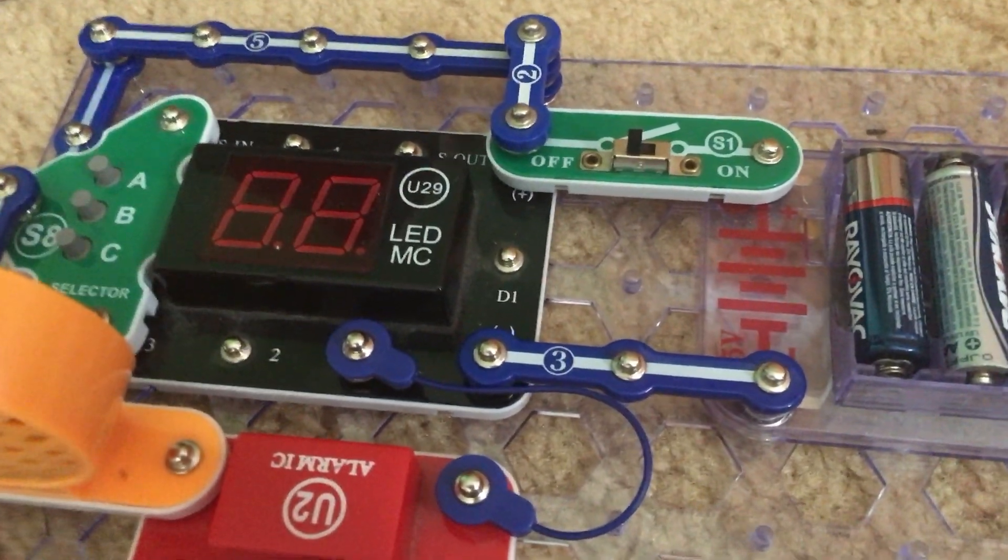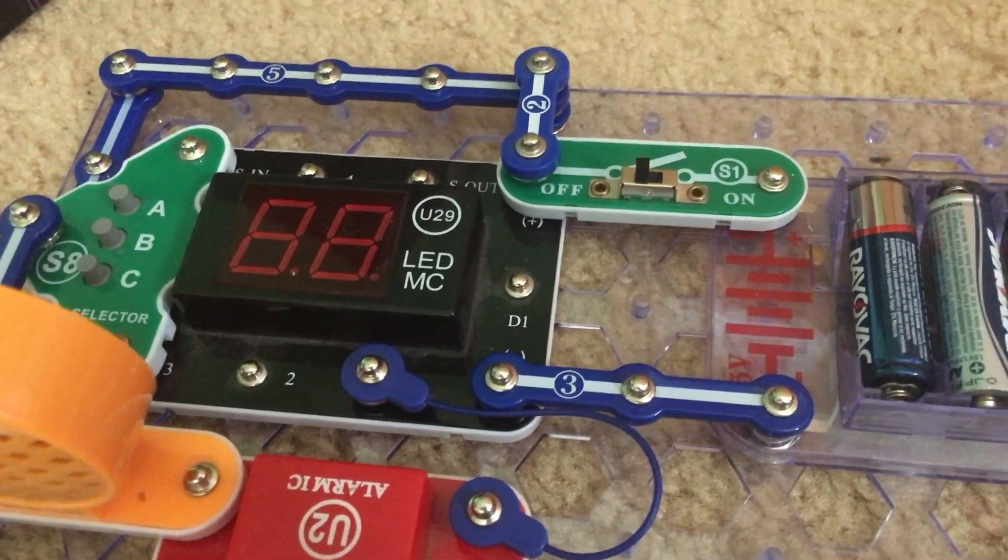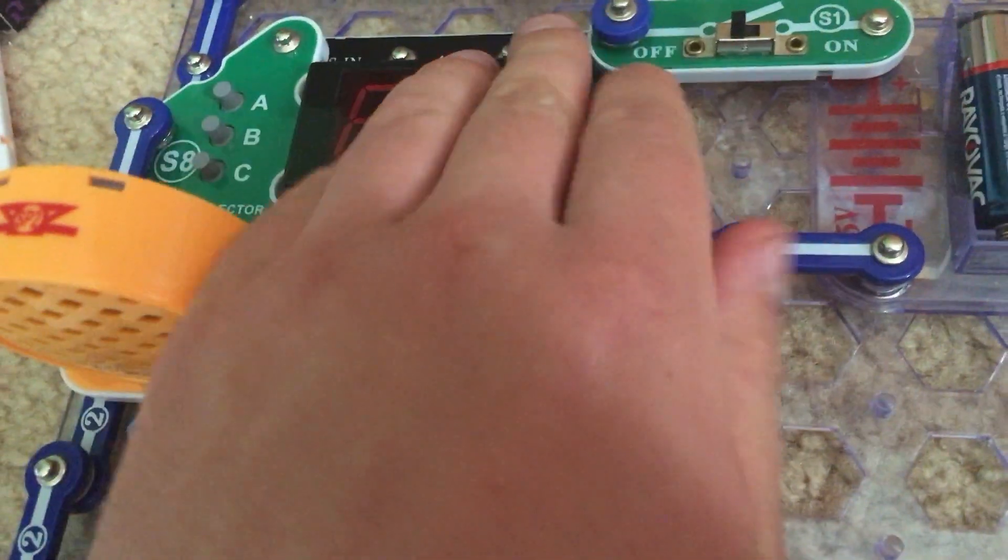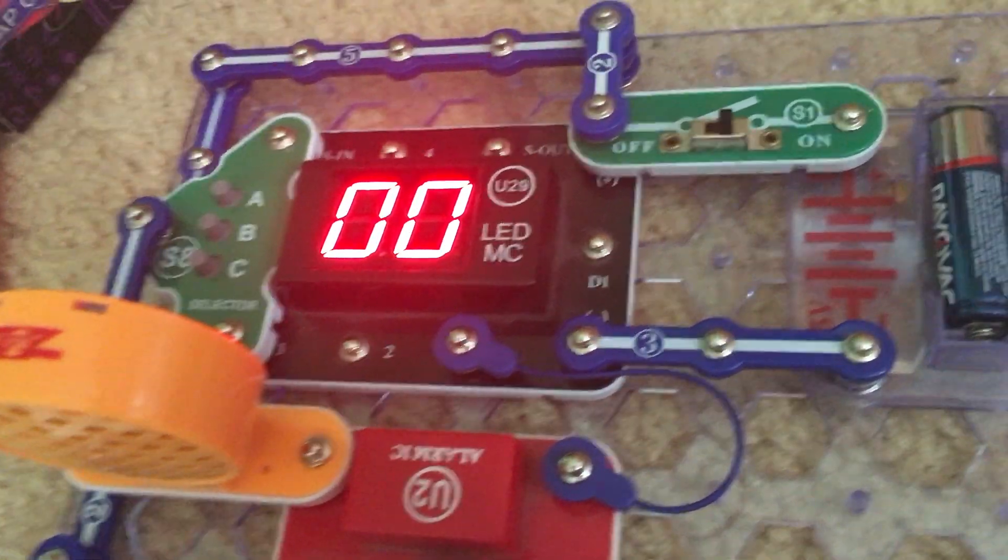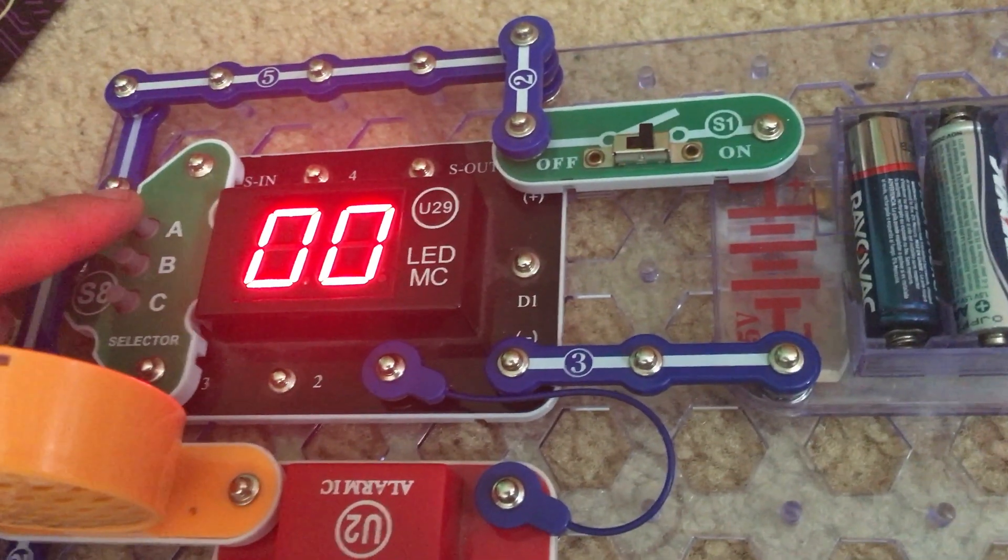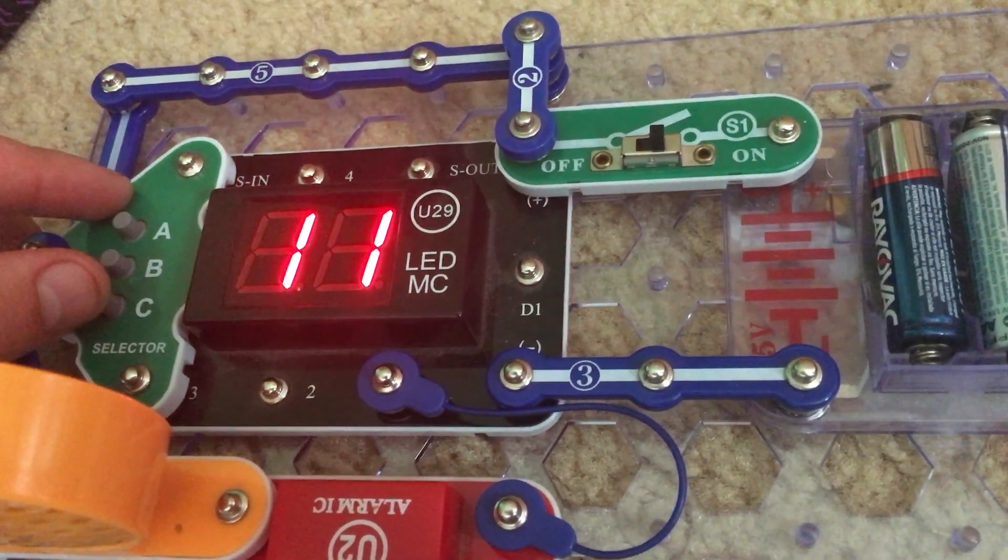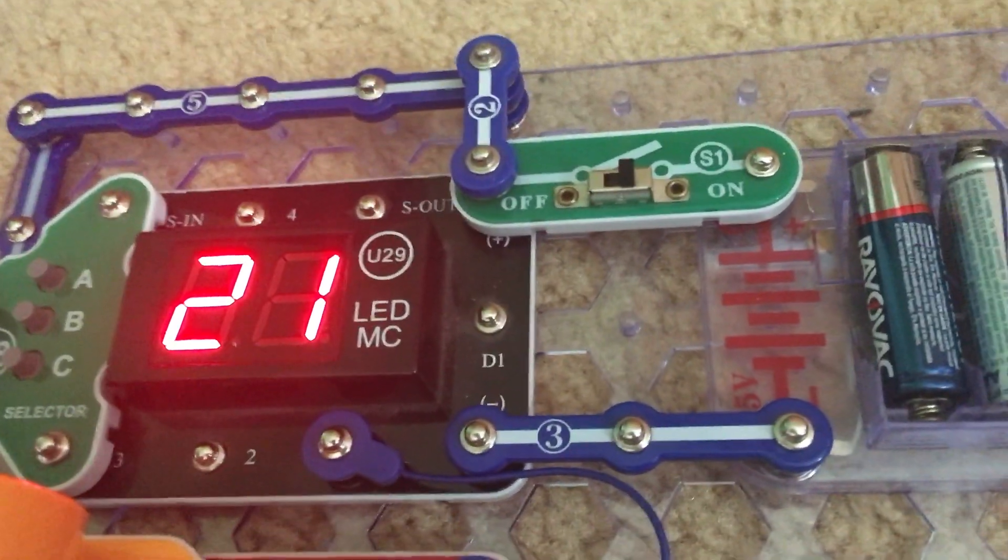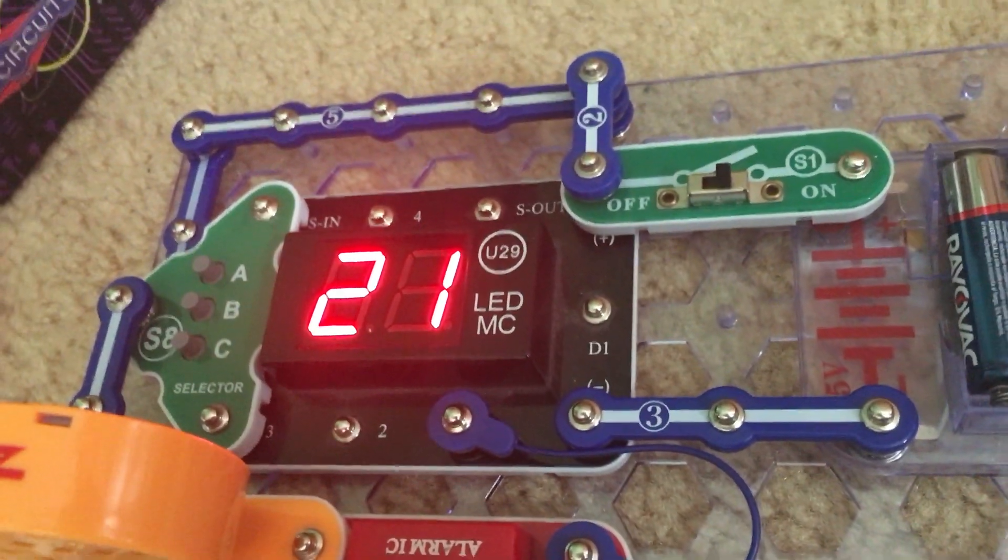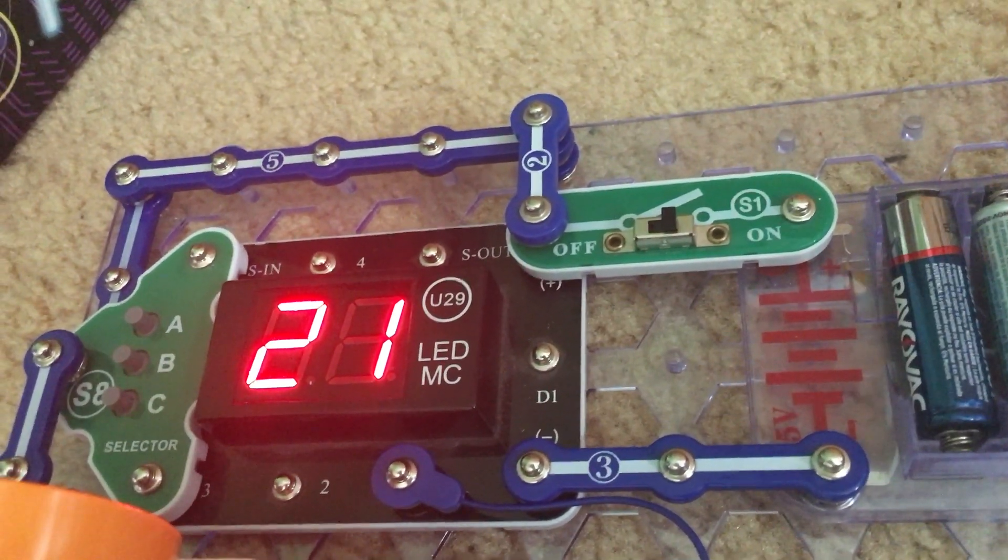Projects 52 through 56 will be covered in this video. The projects are called funky siren. And this is funky siren one. I can tell you that the alarm integrated circuit provides five sound effects.